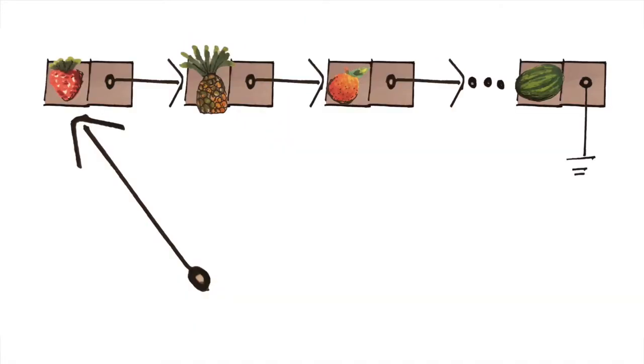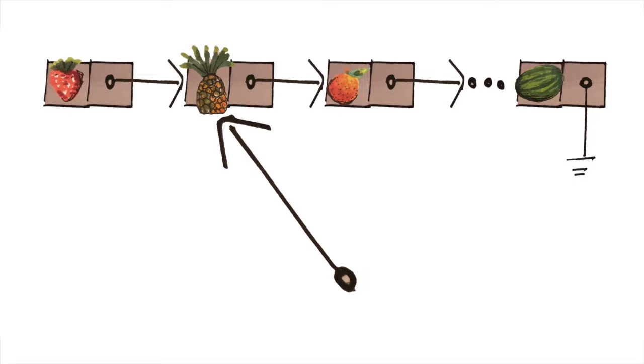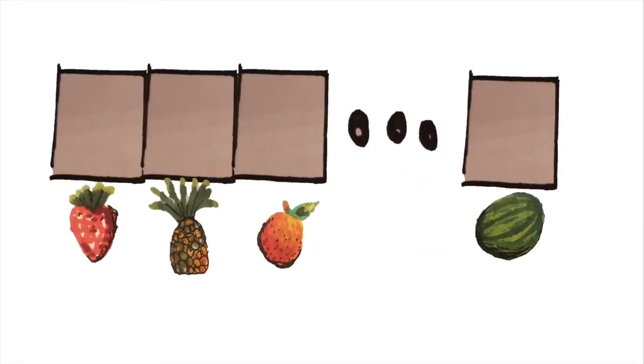You could use a linked list with nodes that have both the fruit name and its price, but then you'd have to search through the whole list to find your fruit. You want an array, but there's no array type that lets you index by fruit name.